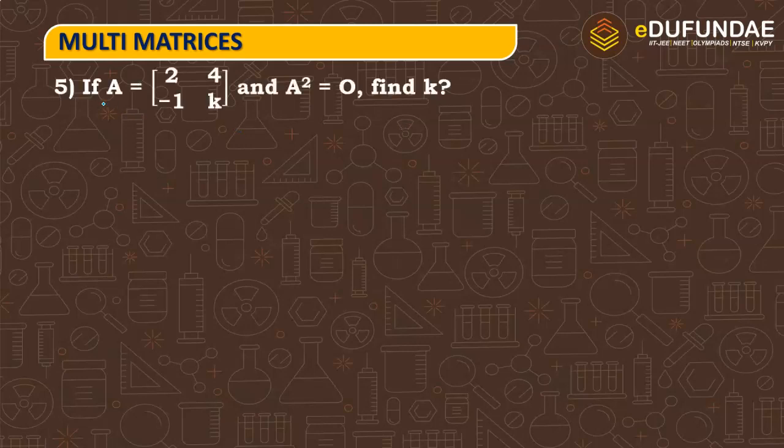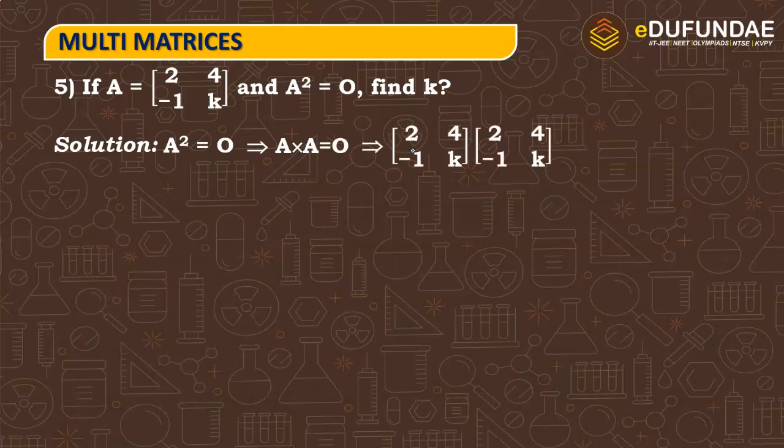So next question now, if A is equal to 2, 4, minus 1, k which is 2 cross 2 matrix and A raised to power 2 is equal to 0, then we need to find out k. Again same concept, if A square is, then A square is A into A. That means 0 matrix, 0 matrix of 2 cross 2.